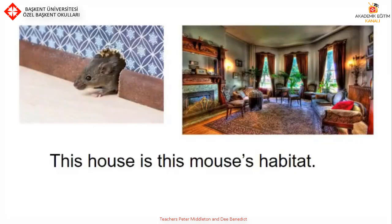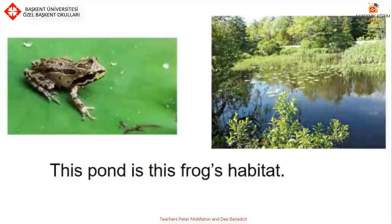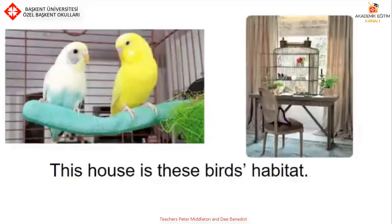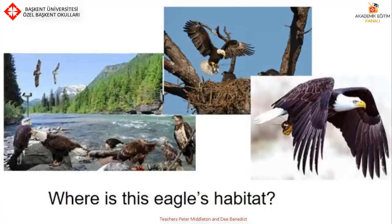Here is a house. There's a mouse in the house. What other animals live in the house? Here is a pond. There is a frog in the pond. What other animals live in the pond? Here are budgies. Budgies live in a cage. What other animals live in a cage? These are eagles. Can you see the habitat that they live in? What things can you see in this picture? What habitats can you name?